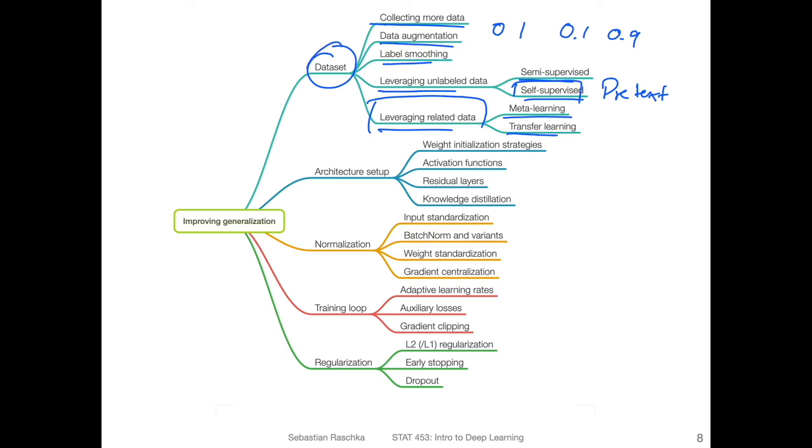This was all considering datasets. There are also some techniques related to architecture setup, how you structure your architecture, the deep neural network architecture. There will be weight initialization strategies. We will discuss that in this course. Choosing activation functions, we talked about this already last week when we talked about, for example, the ReLU activation function. Residual layers, they are so-called skip connections. We are skipping or adding a connection by skipping certain layers. That can also be helpful to avoid vanishing and exploding gradient problems. This is also something we will talk about later in this course.